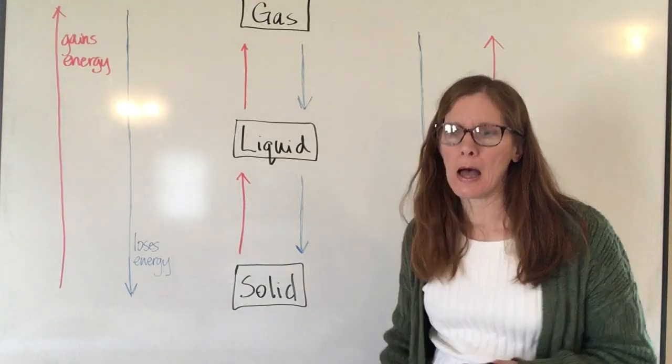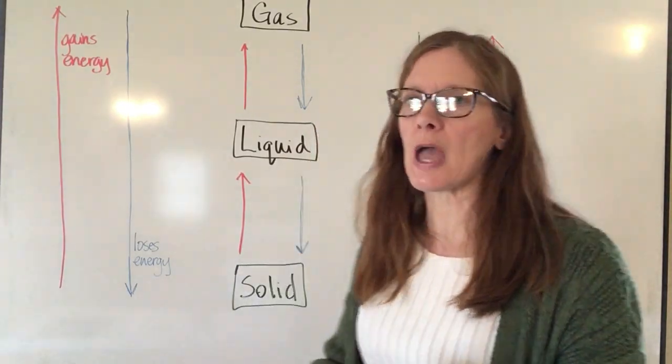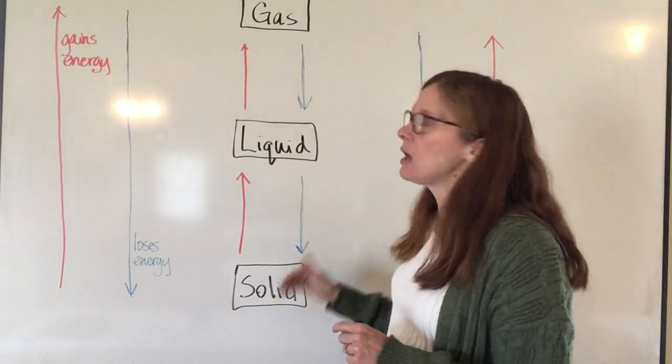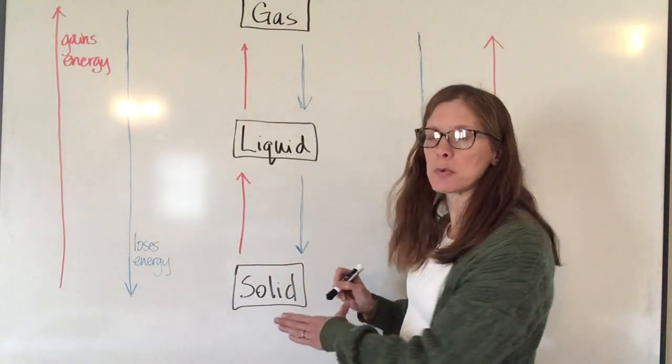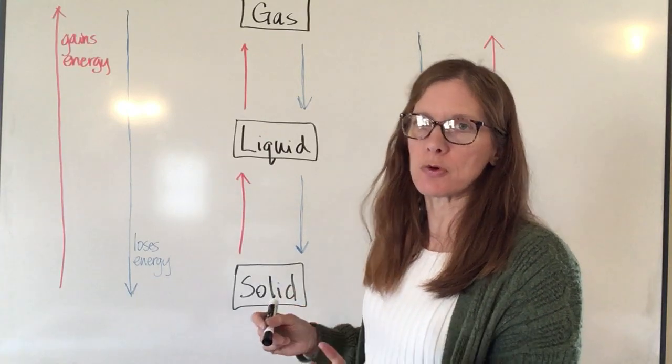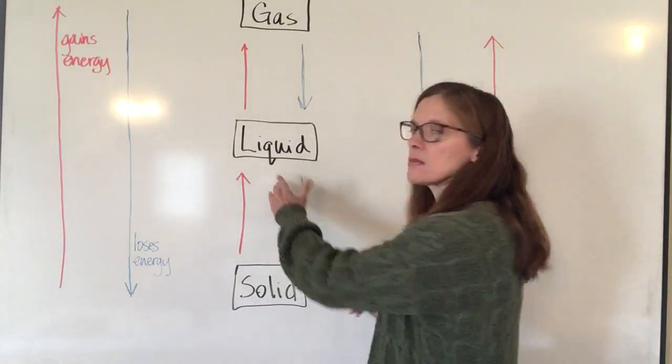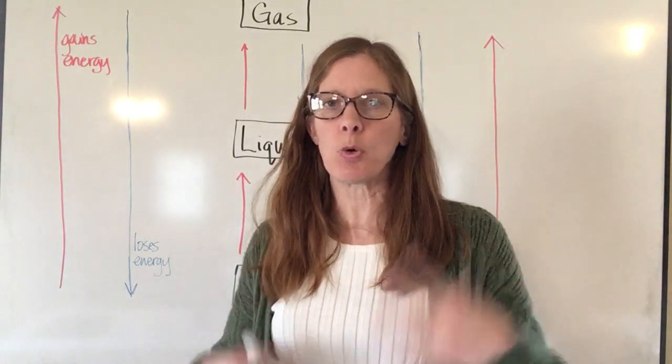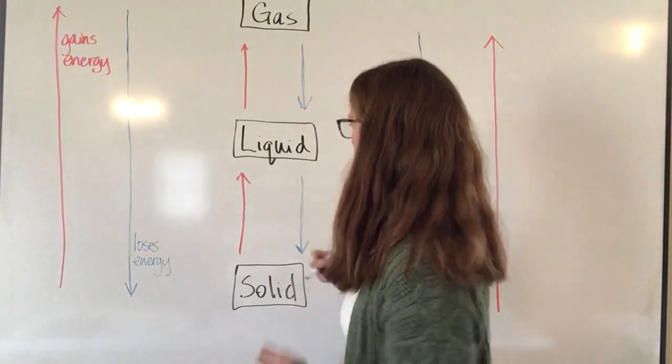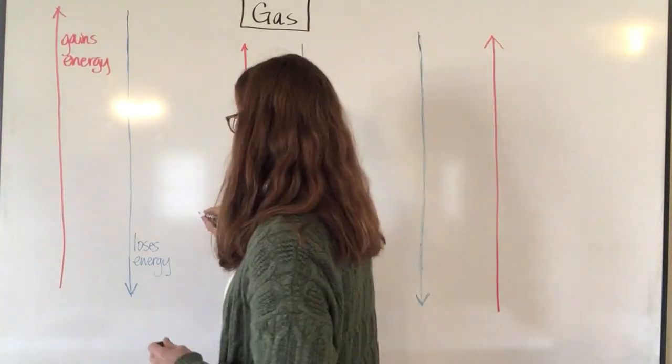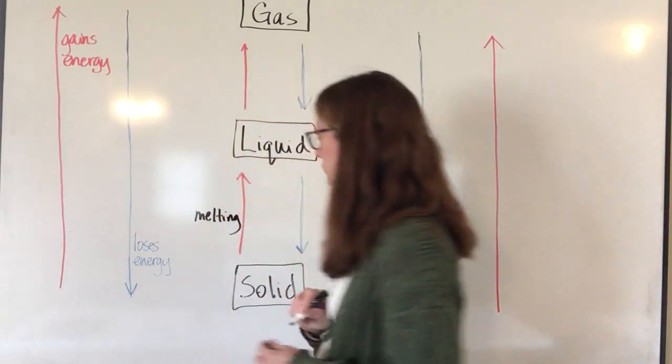So there's a lot of different vocabulary words for these different changes in state. If I start probably with what's maybe the most easily recognizable, if I go from a solid to a liquid, so if you take an ice cube and you set it on the table, what does it do? Yup, it melts. And so going from a solid to a liquid is melting.